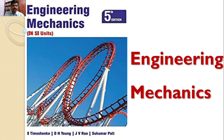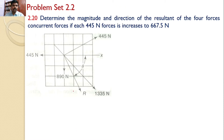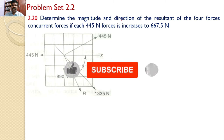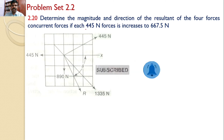Welcome to RK Tutorials, Solutions to Engineering Mechanics, 5th Edition, by S. Timoshenko, D.H. Eng, J.V. Rao and Sukumar Parti. In this tutorial, we will solve problem set 2.2, problem number 2.20: Determine the magnitude and direction of the resultant of the four concurrent forces if each 445 Newtons force is increased to 667.5 Newtons.